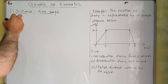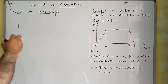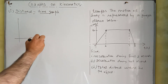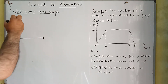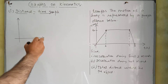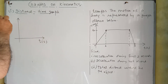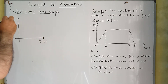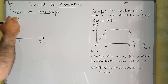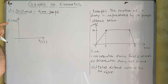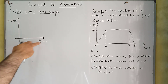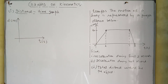In the distance-time graph, we will have time on the x-axis and distance on the y-axis. Distance will be measured in meters and time will be measured in seconds.